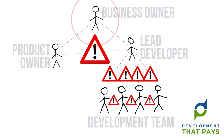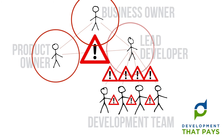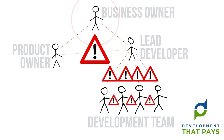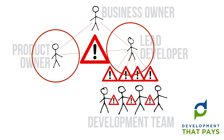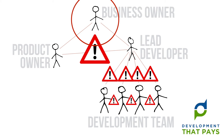Let's finish things off with the relationship between the business owner and the product owner and the lead developer respectively. I found this trickier to pin down. And then I remembered several occasions where the product owner and the lead developer were trying to do a better job of working together, only to be undermined by the business owner at every turn. So for this reason I'm going to assign a fairly high importance to these relationships.